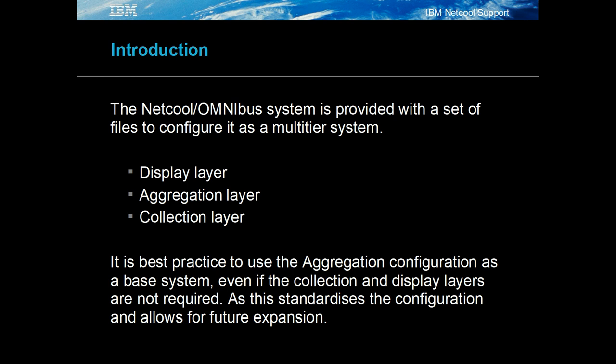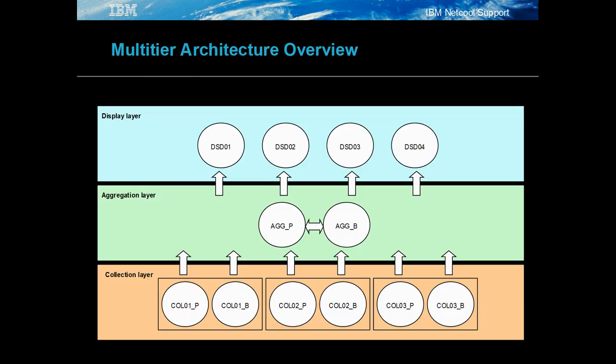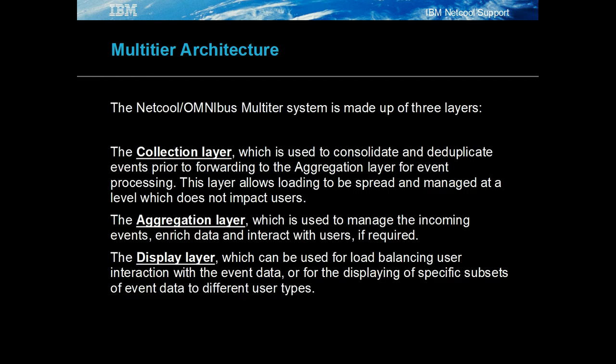It's always best to start any dual-resilient system configured as an aggregation object server layer. The multi-tier system always has two dual-resilient object servers at the aggregation layer. The aggregation layer performs event processing and event enrichment. The collection layer consolidates and deduplicates events. The display layer performs the task of interacting with users.